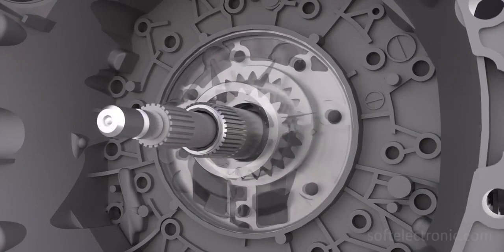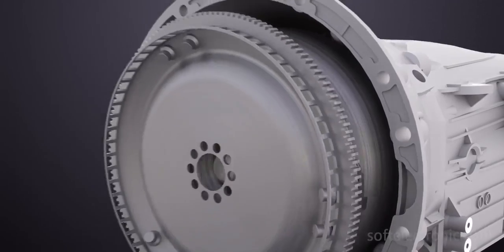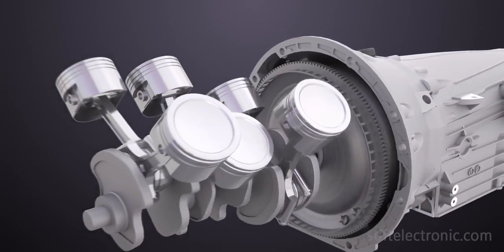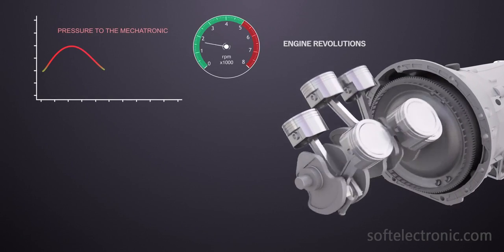The fluid pump is firmly attached to the crankshaft of the engine via the torque converter housing. Because of this, the fluid which is fed from the pump to the mechatronic has variable pressure depending on the revolutions of the engine.